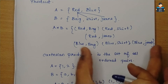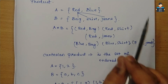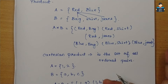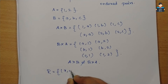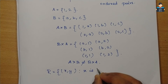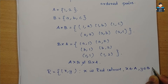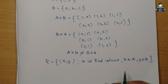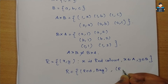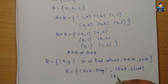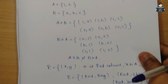A relation R is a subset of A cross B. Using our color-clothing example, one possible relation R could be: {(red, bag), (red, shirt), (red, jeans)}. This is a valid relation from Set A to Set B, as it is a subset of the full Cartesian product.